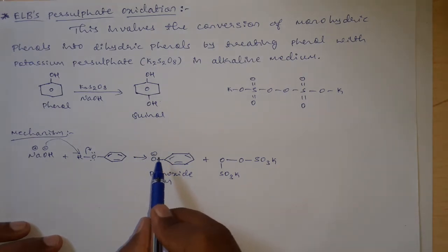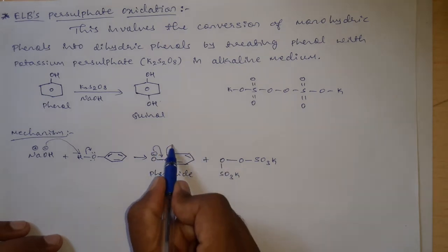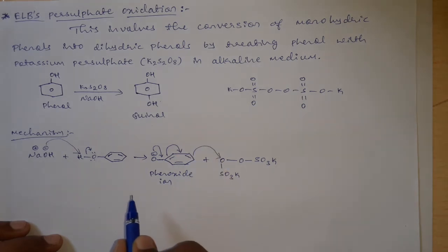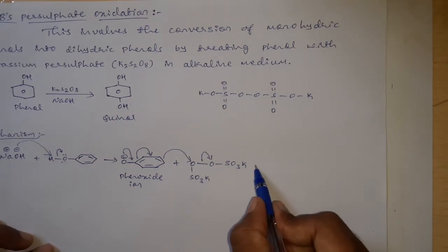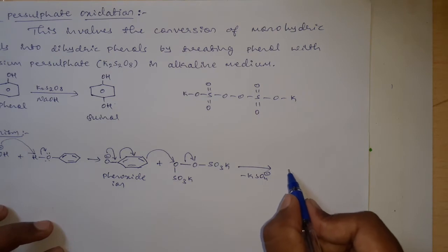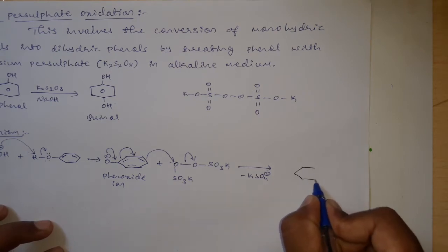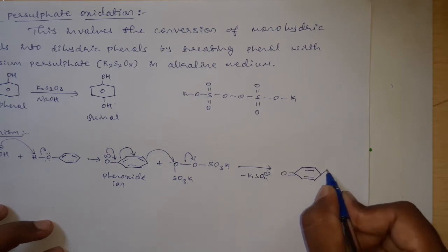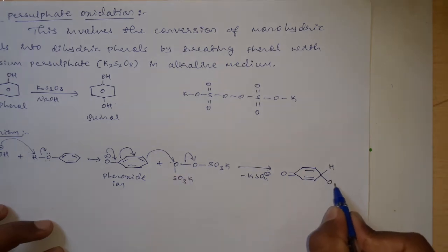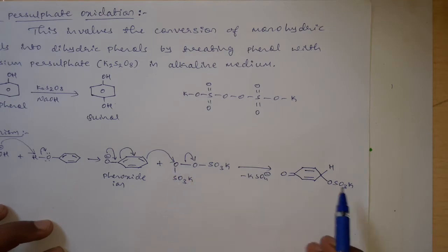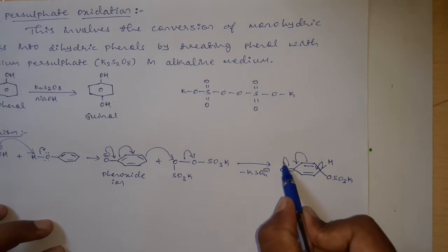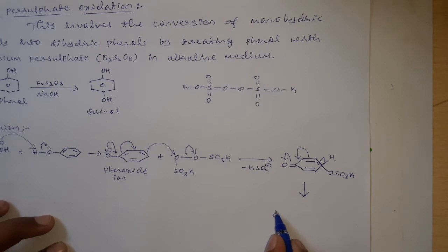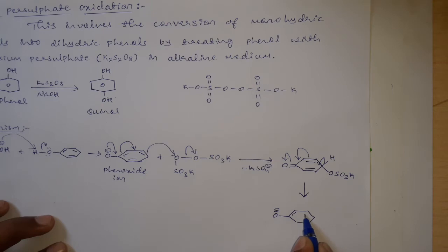The negatively charged oxygen of the phenoxide ion starts delocalization of the negative charge into the benzene ring. The bond migrates and the pi bond moves toward the oxygen. As this oxygen forms a new bond with the carbon atom of the benzene ring, it breaks the O–O bond of the persulfate. Loss of KSO4− takes place, forming an intermediate with O–H and an O–SO3K group still attached. Back bonding then occurs — the bond migrates back into the benzene ring — and the oxygen carries a negative charge, O−.